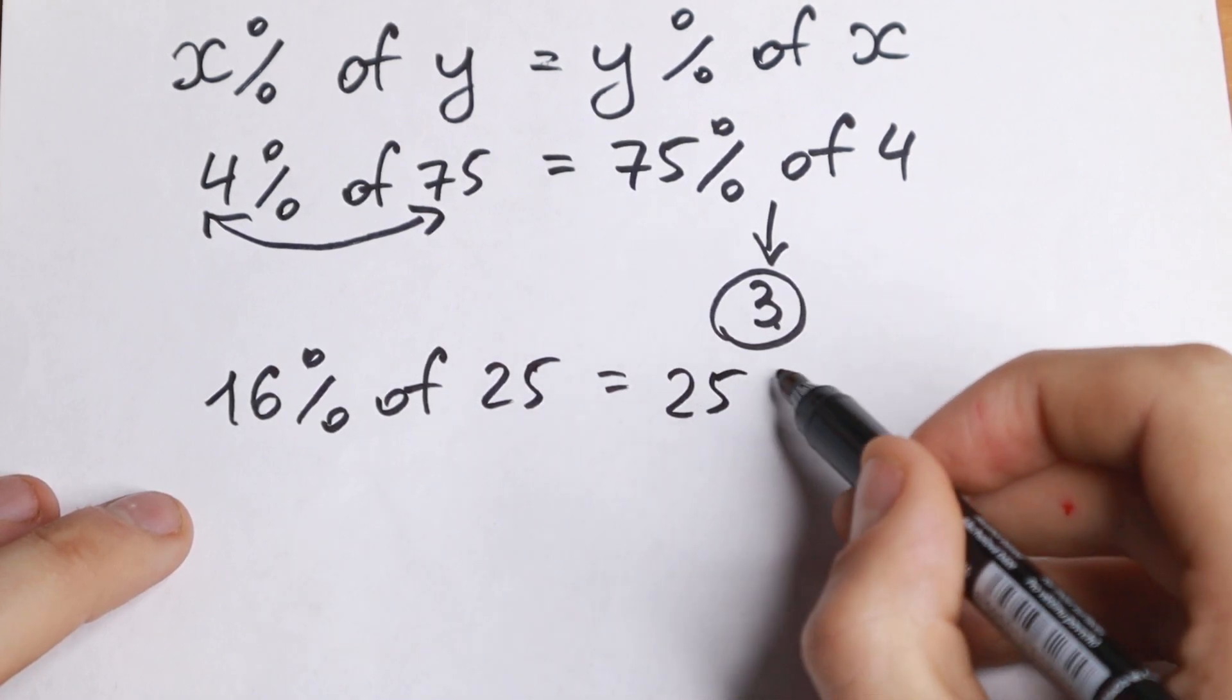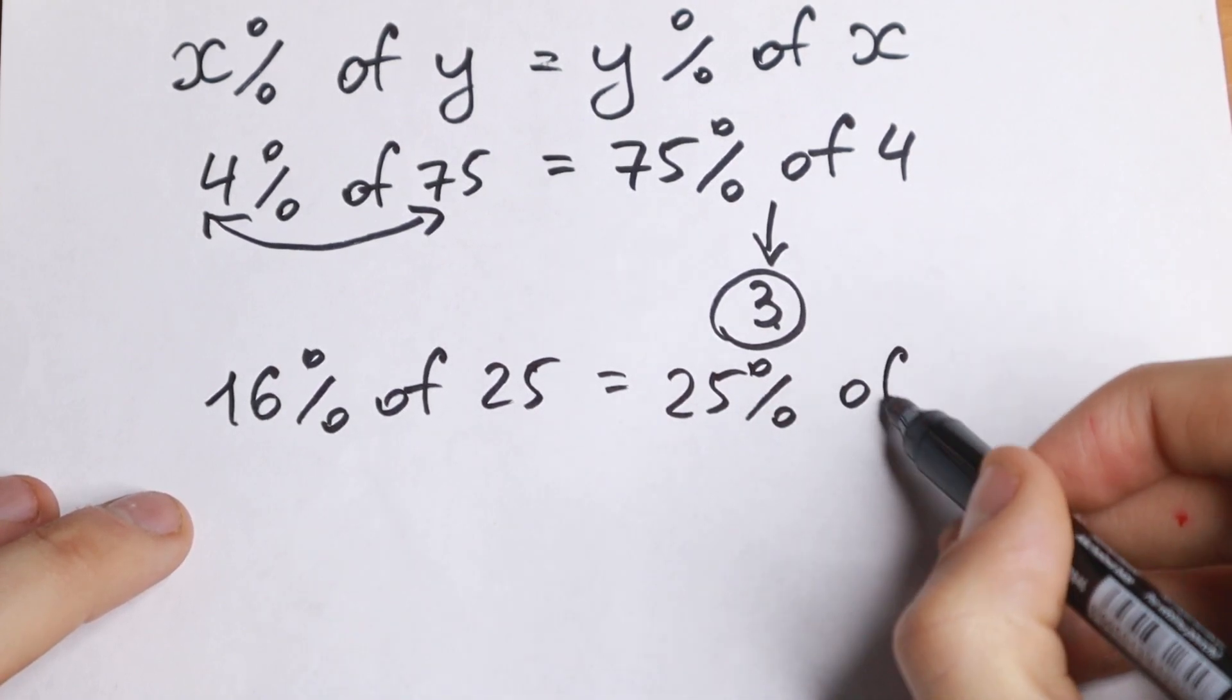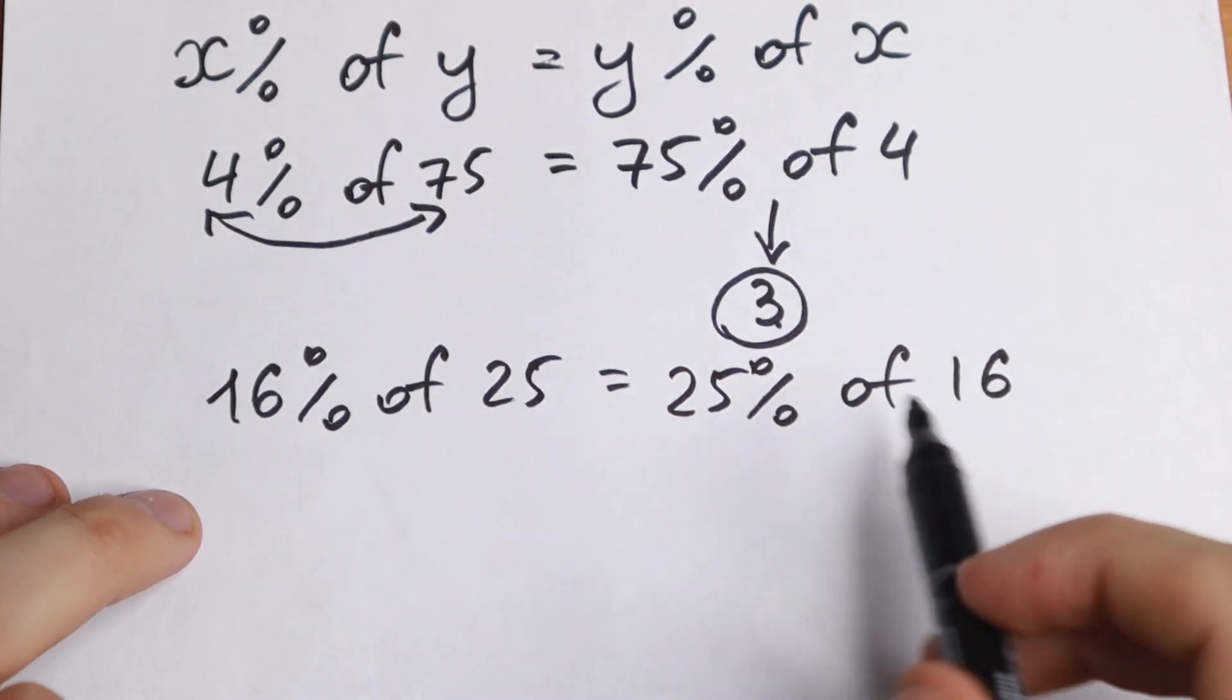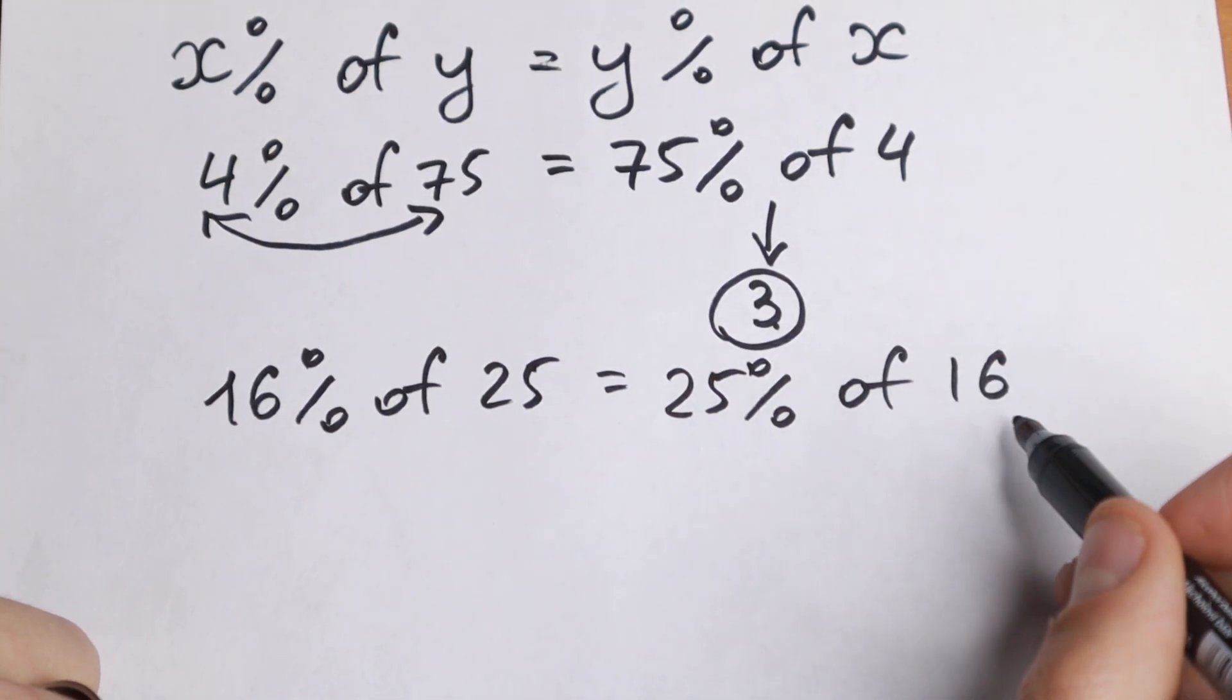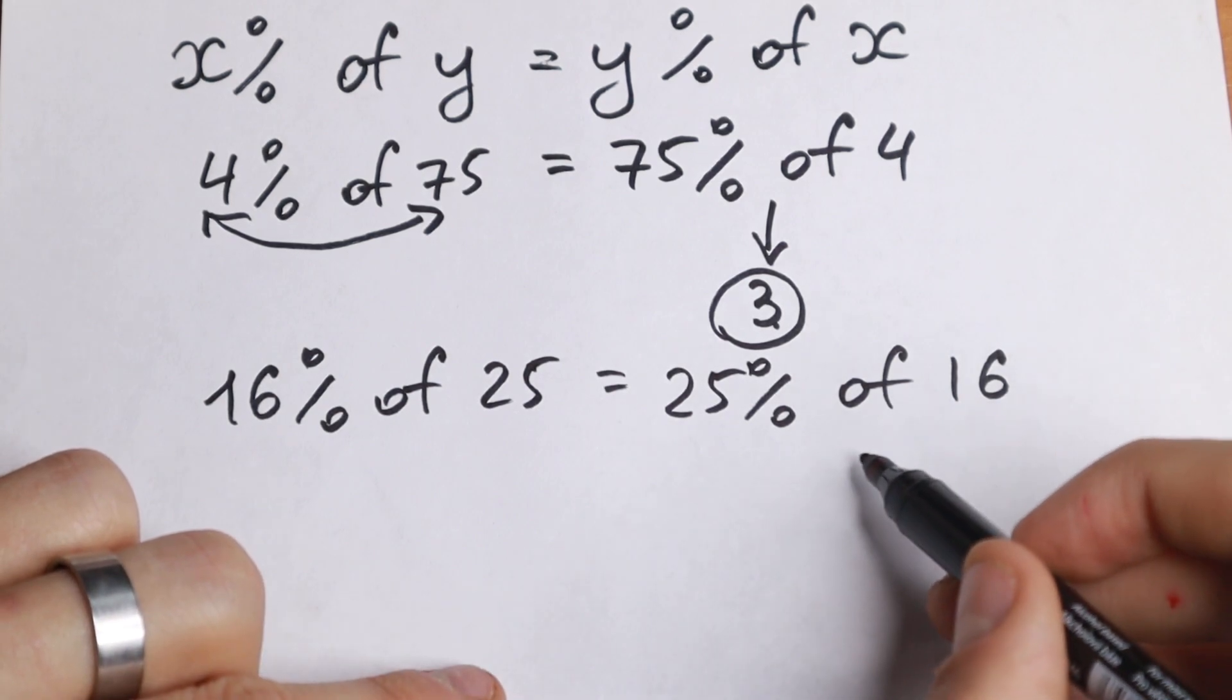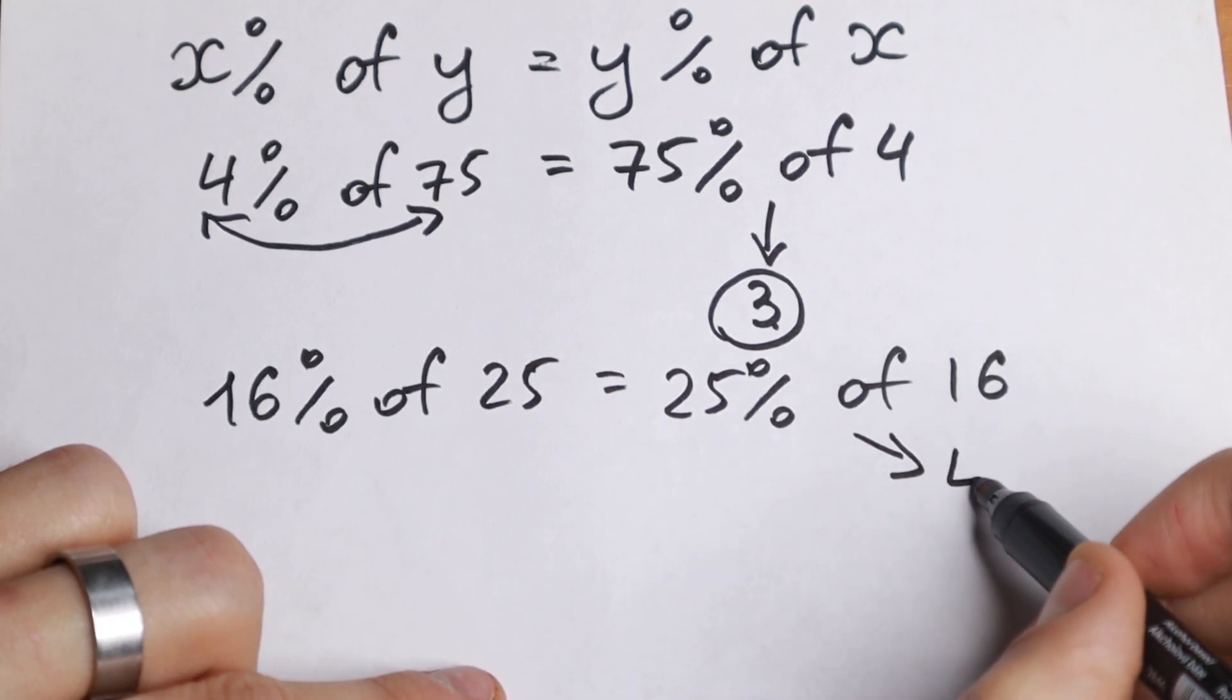We will have 25 percent of 16. And it's not hard to think that 25 percent means we just divide by 4. And 16 divided by 4 will be equal to 4.